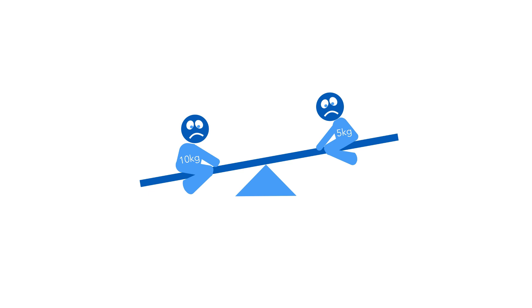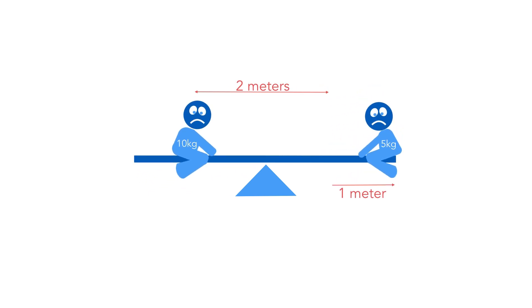Since the lighter child is half the weight of the heavier child, you must put her twice as far from the centre to attain the perfect equilibrium.